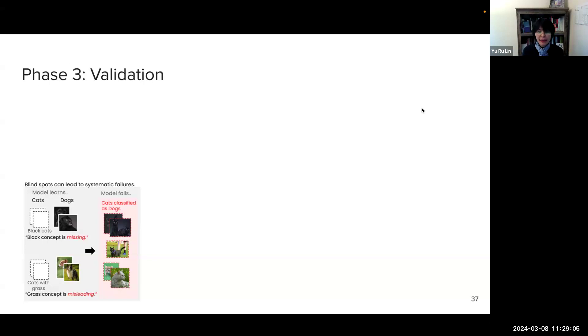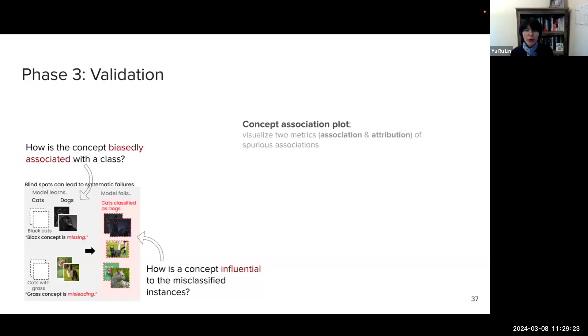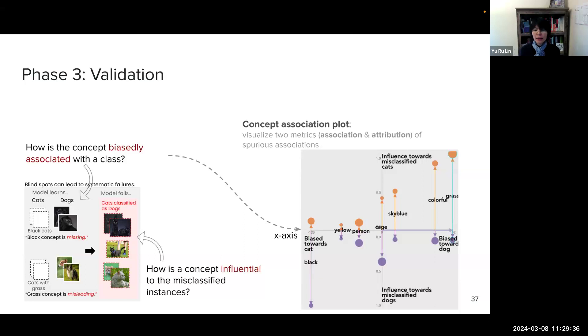So now the validation phase answers two questions. How is the concept biasly associated with a class? And how is the concept influential among misclassification instances? So we show the information in a concept association plot where the association is shown on the x-axis. This is the bias toward a class. So from left to right, you see how concepts are biased to cat and to dog. And the attribution is shown on the y-axis. This is the influence to misclassifications in a particular class. So from top to down, you see how concepts are influential to misclassify cats and to misclassify dogs.